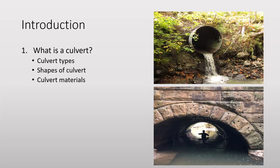Rigid culverts come in several different shapes due to the nature of the material used. They can be round, boxed, elliptical, or arched, or a combination thereof. Flexible culverts, however, predominantly come in the round shape due to the limitations of common corrugated metal or corrugated plastic pipe.